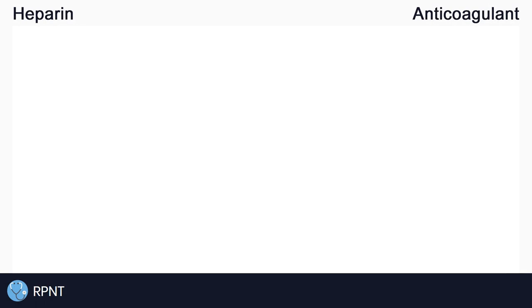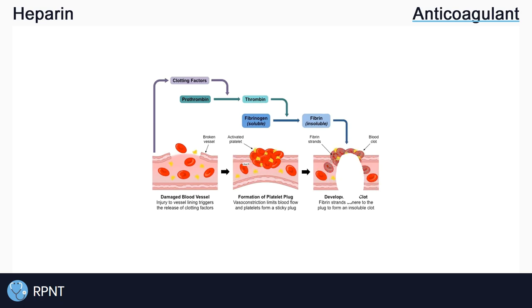Hi everyone, this is Ryan from RPNT.ca and today we're going to be talking about the drug heparin, also known as unfractionated heparin. Heparin belongs to the anticoagulant drug classification. Anticoagulants are drugs that inhibit clotting factors. Clotting factors make up one of two important steps that cause our blood to clot, the other being platelet aggregation.